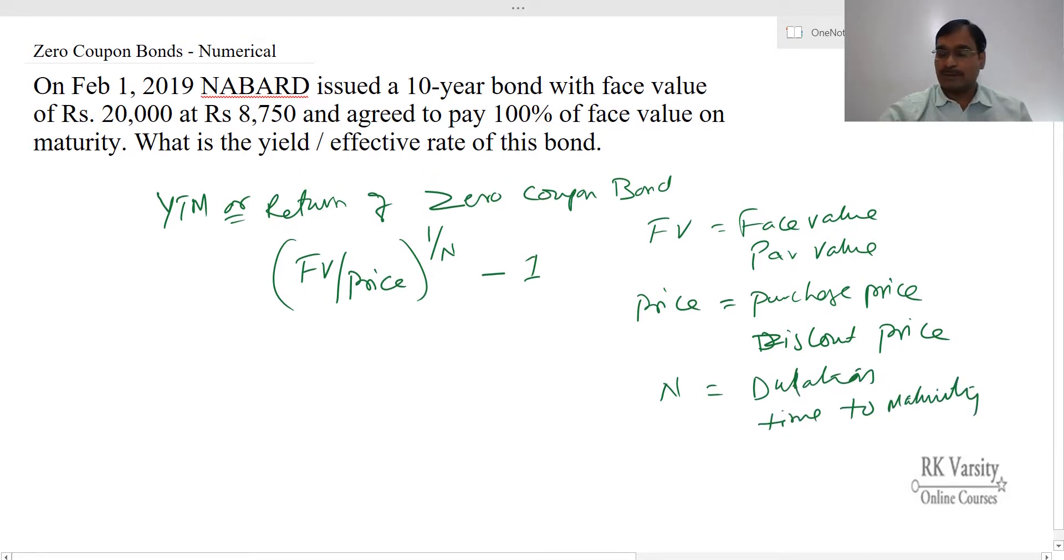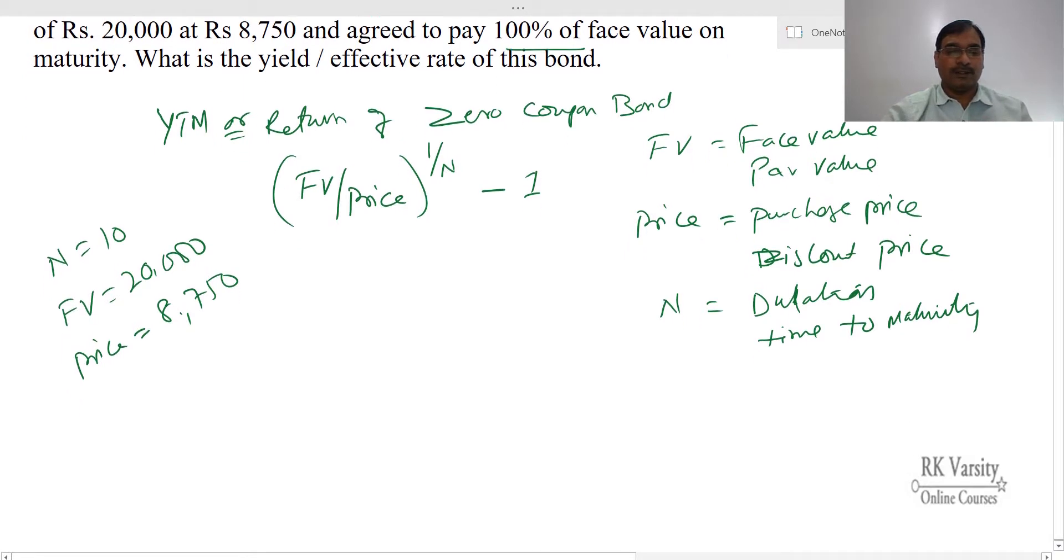So here in our example, NABARD issued a 10-year bond, so N equals 10, with a face value of rupees 20,000, and this is issued at a price of 8,750, and agreed to pay 100% of face value on maturity. So our face value is 20,000 upon price at which it is purchased, 8,750, raised to the power of 1 upon 10 minus 1.